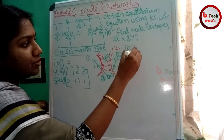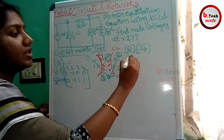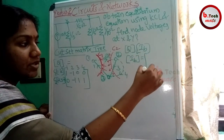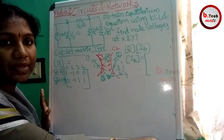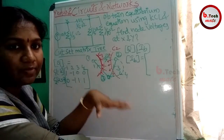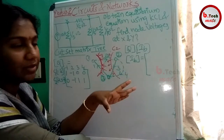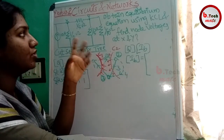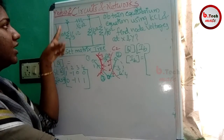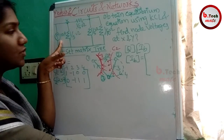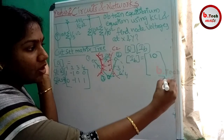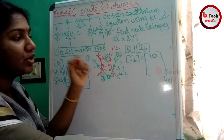Next we form matrix IB, which is the source current column vector. The matrix IB has 4 branches. If there is a source, we add it to the corresponding branch. The first branch has a 10A current source. If the current source direction is the same as the reference direction, it is plus 10; if opposite, it is negative. The other elements are zero. There are 4 branches and 4 rows.